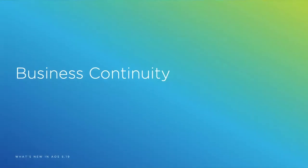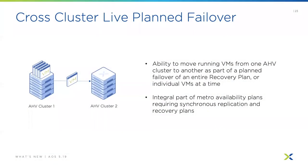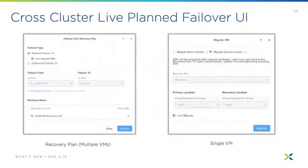Let's look at business continuity enhancements. Cross-cluster live plan failover: not all business continuity plans are for disasters. Performing routine maintenance or upgrades without disruption is an important part of a BCDR strategy. In AOS 5.19, AHV simplifies workloads to migrate applications live as part of a planned failover. Any VM protected by synchronous replication and a recovery plan can be live migrated between two designated clusters. You can migrate all VMs as part of the full recovery plan in Prism Central, or migrate a single VM.